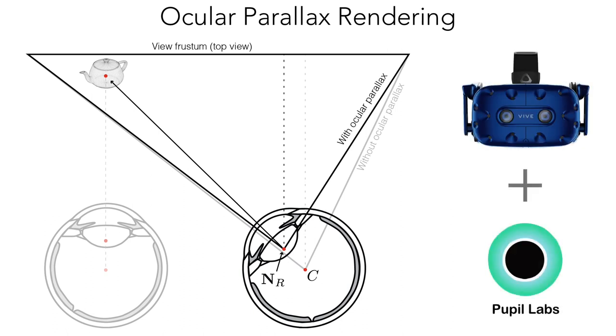We implemented a virtual reality display prototype using the HTC Vive Pro with a 120Hz pupil labs eye tracker to evaluate ocular parallax rendering.